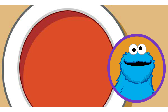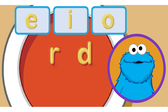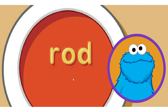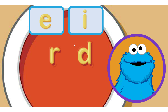Look at this delicious bowl of soup. Me see two letters there. But the word is missing an important middle letter noodle. You choose the middle sound for the word. Move the little star to the letter sound you want and click.